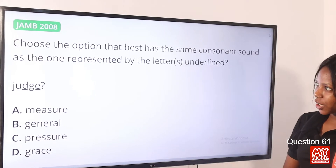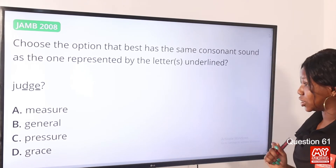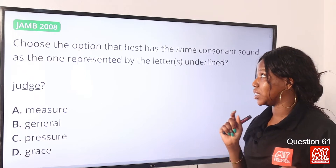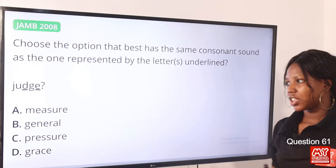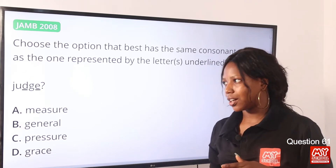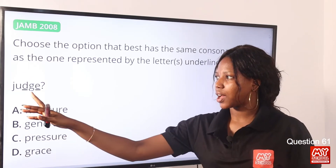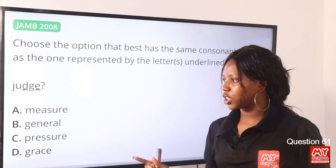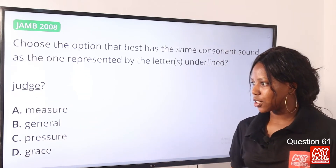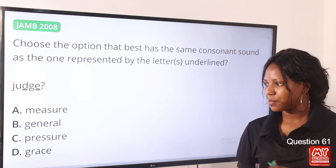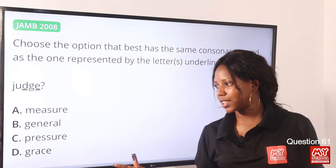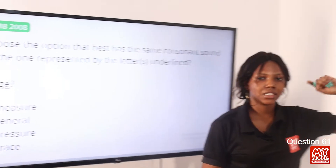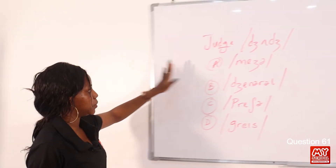Choose the option that best has the same consonant sound as the one represented by the letter or letters on the line. The word is 'judge' and we have DGE being underlined. Option A: measure. Option B: general. Option C: pressure. Option D: grace. Now let's head over to the board for the transcription.